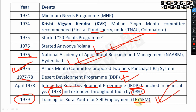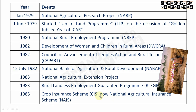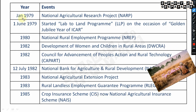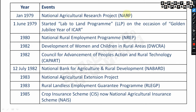TRYSEM stands for Training for Rural Youth for Self-Employment, started in 1979. In January 1979, the National Agricultural Research Project (NARP) was launched. The Lab to Land Program was started on 1st June 1979, on the occasion of the Golden Jubilee Year of ICAR — very very important.